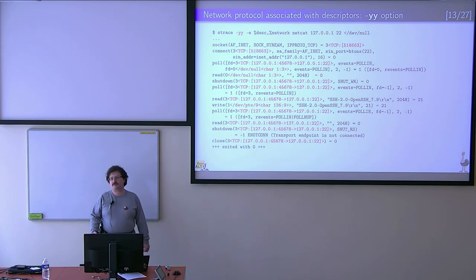While talking about extended tracing, I mentioned dash y option. And if you type it twice, it will get even more information associated with descriptors. In this example, you can see how this information is extended while these descriptors are getting more and more connected. For example, when the socket is just created, it's just a TCP socket, but when it's connected, strace can print more information, source and destination address and port, for example.